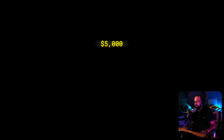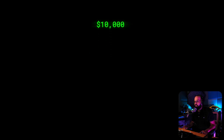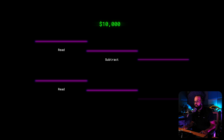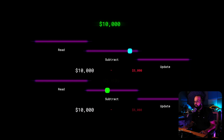But in this example we have two threads and two cores executing in parallel. You can see it reads the ten thousand dollars originally and then performs a subtraction on that ten thousand dollars — twice.